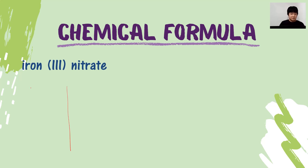The next example is iron(III) nitrate. Same approach — we separate into cation and anion first. The cation is iron(III) and the anion is nitrate. Iron(III) means Fe 3+, because of the 3. Nitrate is NO3 minus.